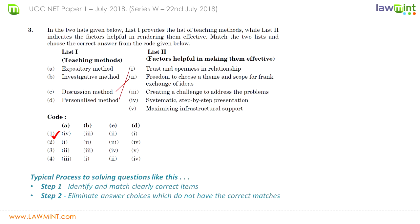Looking at D in list one — the personalized method — the teacher interacts with students on a one-to-one basis or in a small group, giving personalized attention. This is where trust and openness in a relationship builds, making it the most effective way for personalized teaching. Therefore D must match with one in list two. Of the remaining options one and four, only option one has D matching with I. Therefore option one is the correct answer.